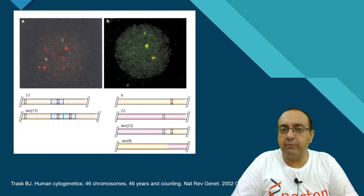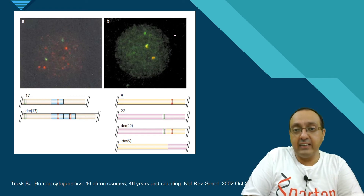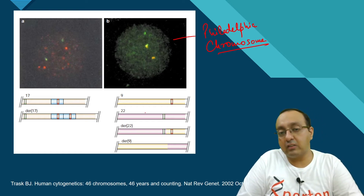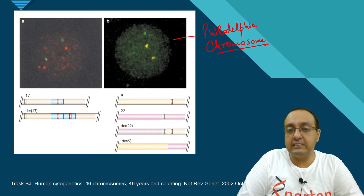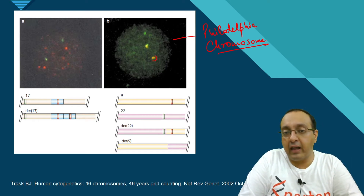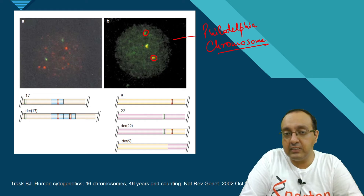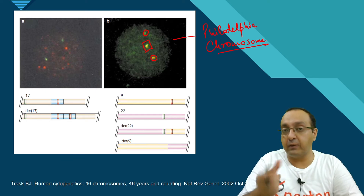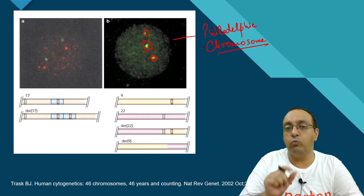Here are two examples of how FISH can help determine chromosomal abnormalities. On the right is the Philadelphia chromosome — caused by translocation from chromosome 9 to chromosome 22. The chromosome 9 signal appears in red and chromosome 22 in green; the fusion gives a yellow signal, signifying both red and green fragments at one locus. On the left is Charcot-Marie-Tooth syndrome, another developmental abnormality.